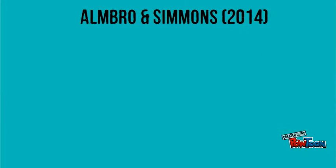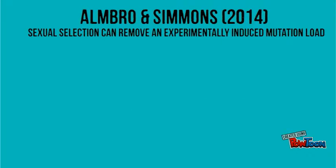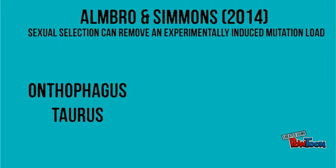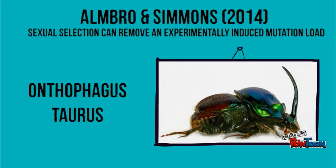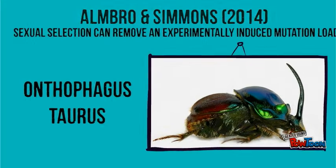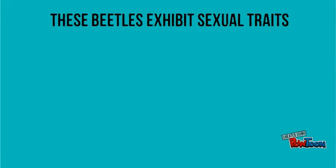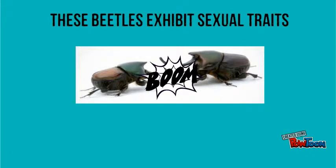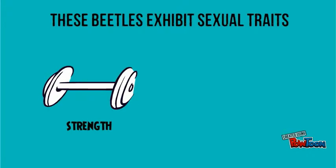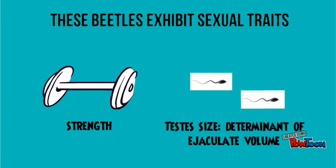Almbro and Simmons put this idea to the test using the horned dung beetle Anthophagus taurus. These beetles engage in direct combat and sperm competition. Horned major beetles use their horns to battle for access to a female's breeding tunnel. The main trait affecting the outcome of the battle is strength. Another important male beetle trait is testes size, which determines ejaculate volume and therefore influences sperm competition.